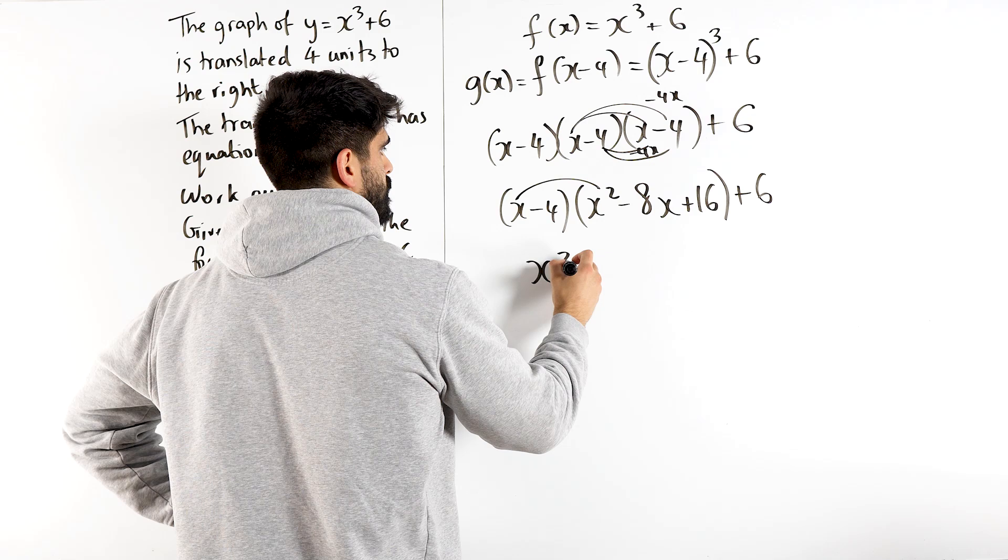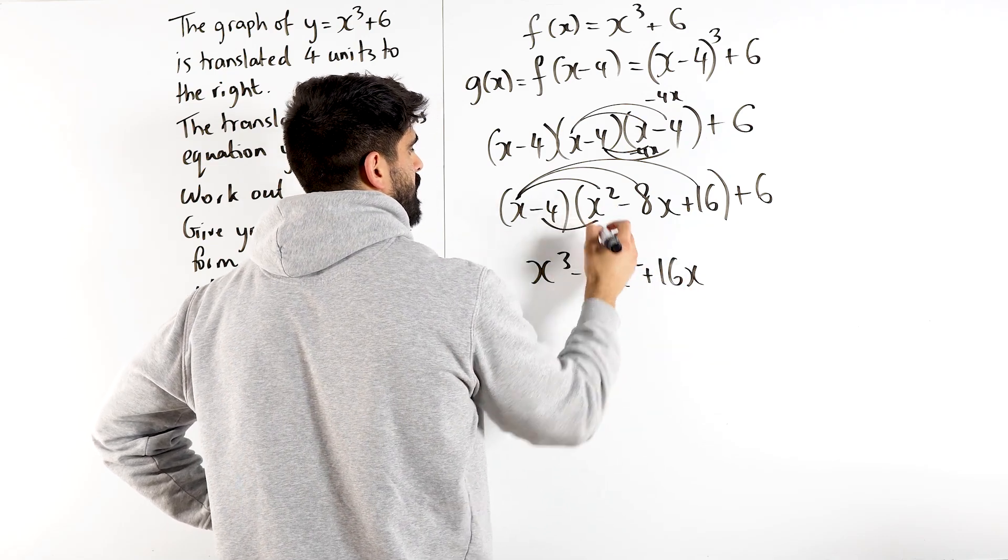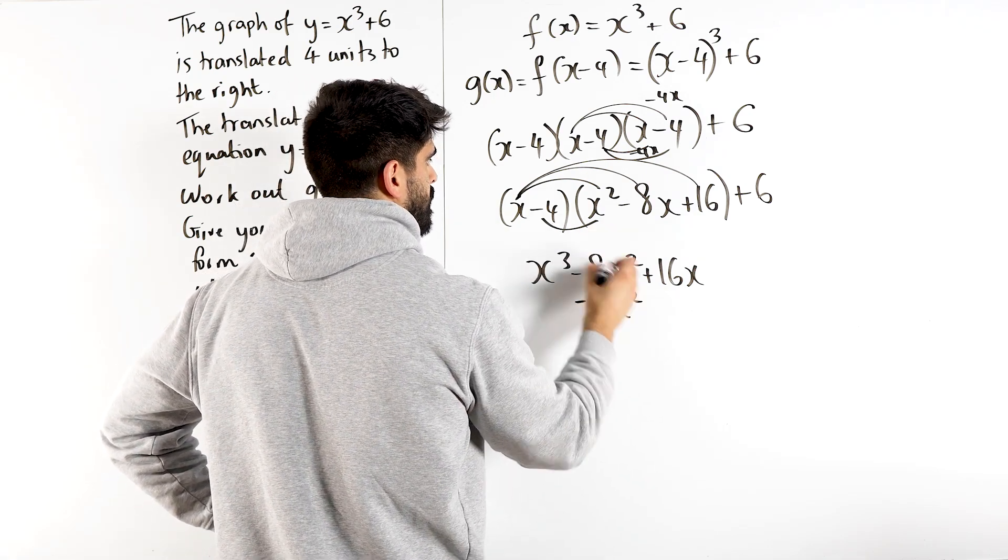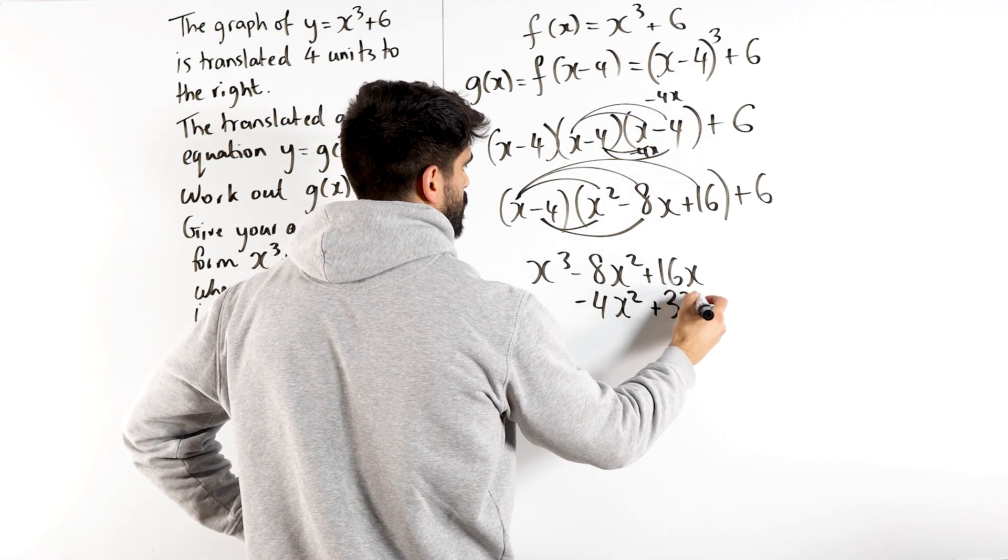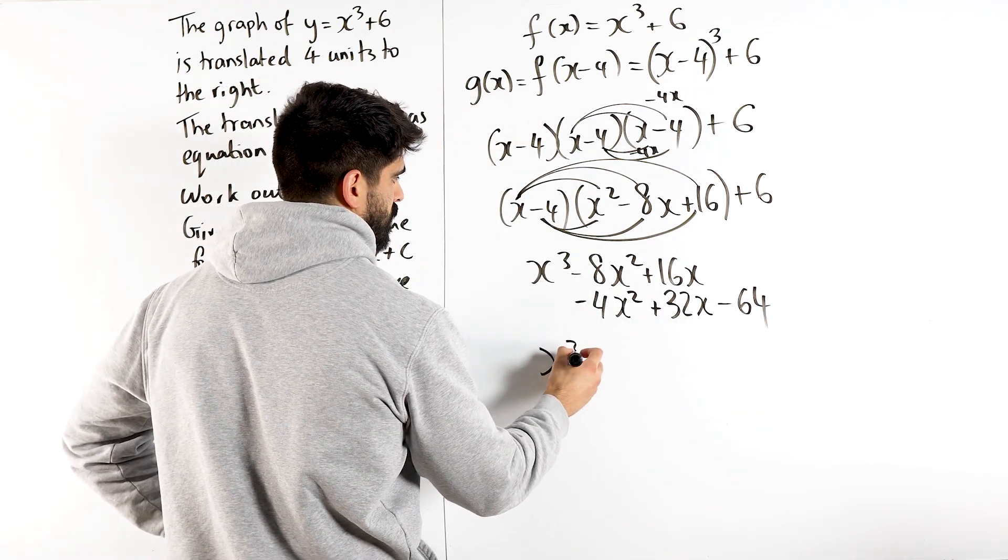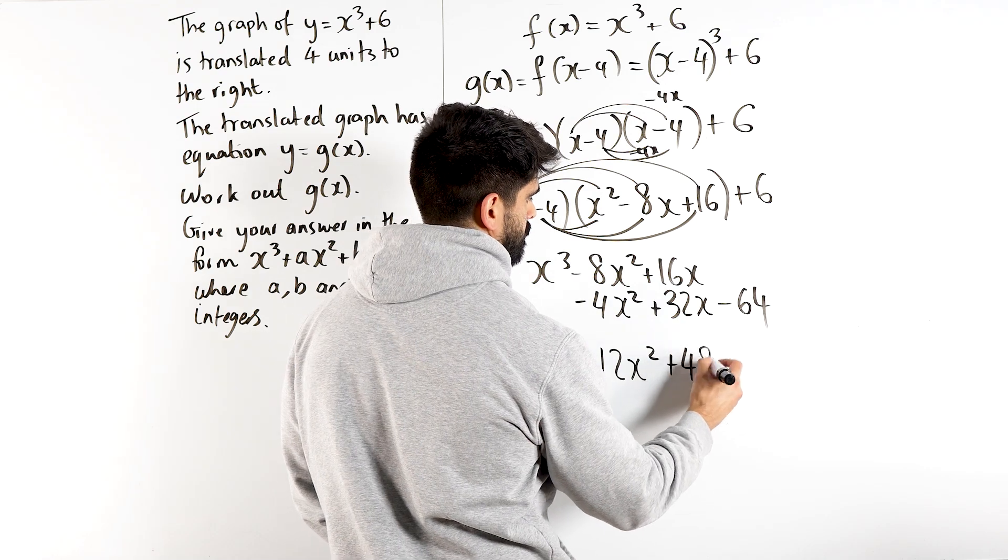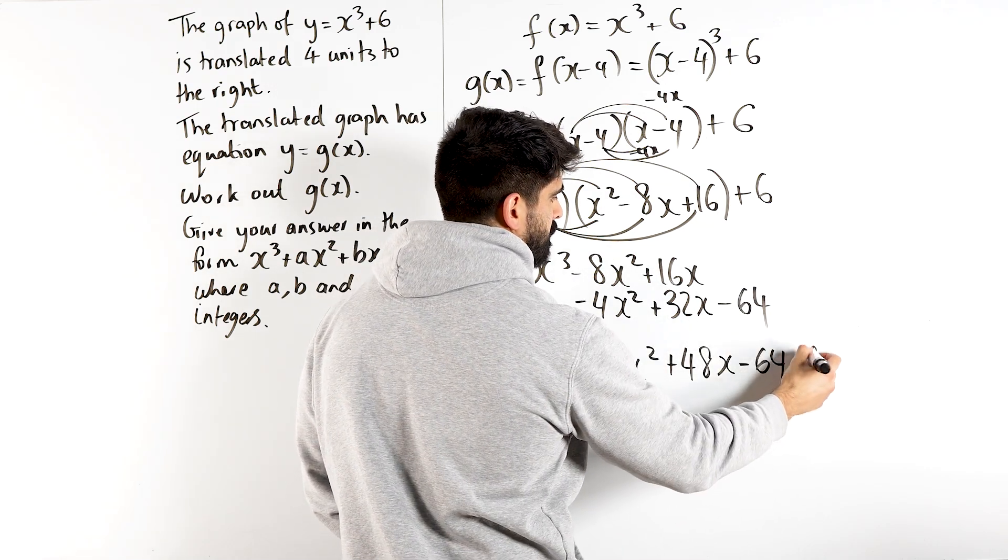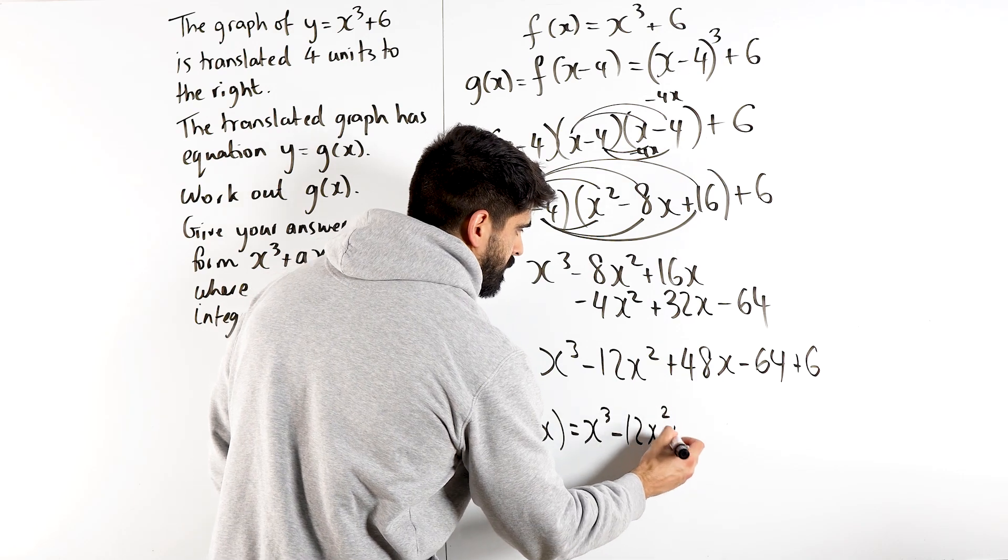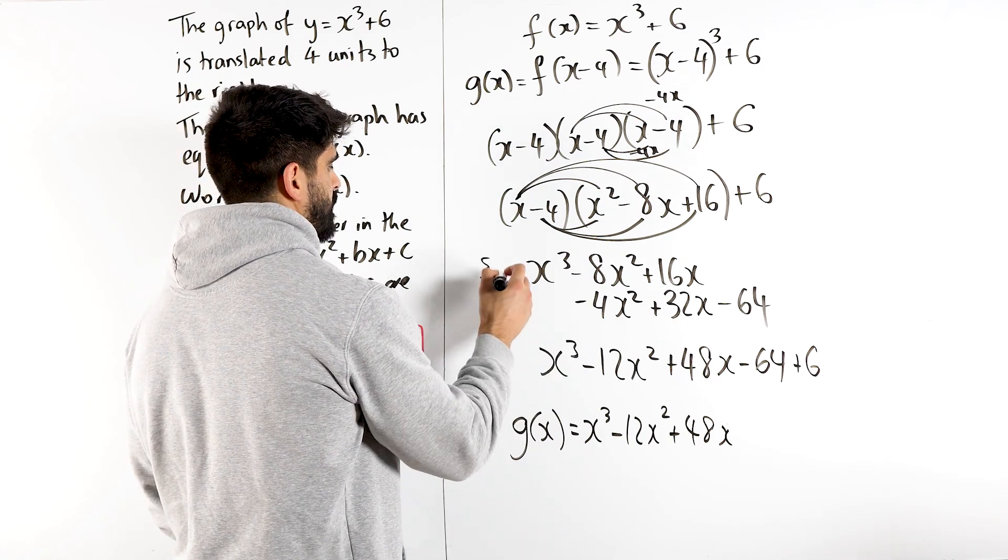Now we're going to do x times everything. x times x squared is x cubed. x times minus 8x is minus 8x squared. x times 16, 16x. Then we have minus 4x squared. Instead of writing everything this way, I actually write underneath, then we can add the columns. Minus 4 times x squared is minus 4x squared. Minus 4 times minus 8 is plus 32x. And then minus 4 times 16 is minus 64. Let's add the columns. x cubed. Minus 8 minus 4 is minus 12x squared. 16 plus 32 is 48x minus 64. Then don't forget, we have plus 6. Then we just simplify that. And there's our answer for g of x. x cubed minus 12x squared plus 48x minus 64 plus 6. It's just the same as doing 64 minus 6, which is 58.